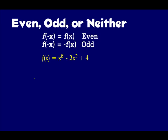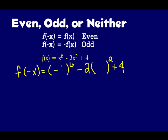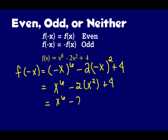Now determine if this function is even, odd, or neither. We put negative x in for x, so f of negative x equals — I put parentheses everywhere there's an x, then substitute negative x. Negative x to the sixth is actually x to the sixth, minus 2 times negative x squared is just x squared, plus 4. So I have x to the sixth minus 2x squared plus 4. Comparing this to the original, they're exactly the same, which tells me this is an even function.